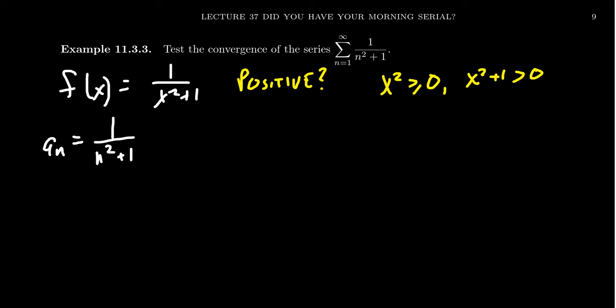And then when you take the reciprocal of a positive number that still is going to be positive. So 1 over x squared plus 1 will be greater than zero. And this is true for any choice of x here. So the answer is yes, f(x) is always positive, absolutely.